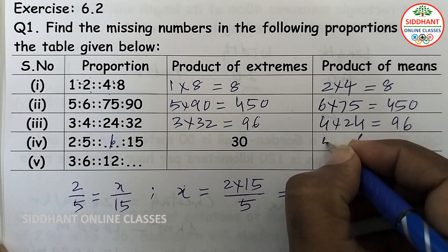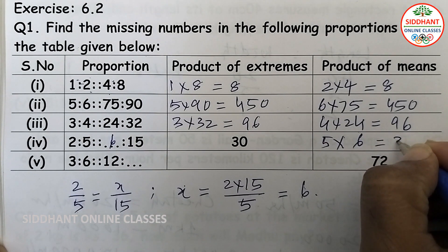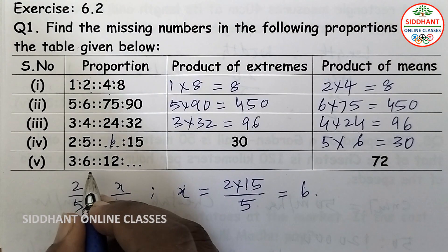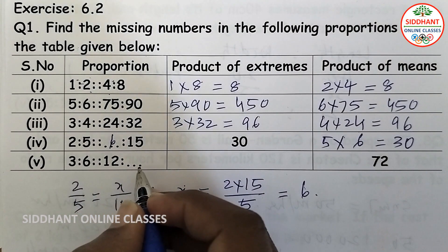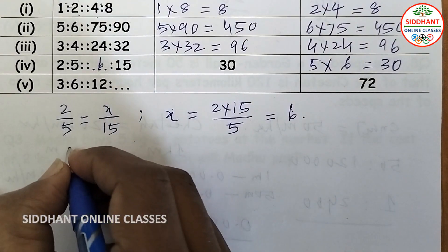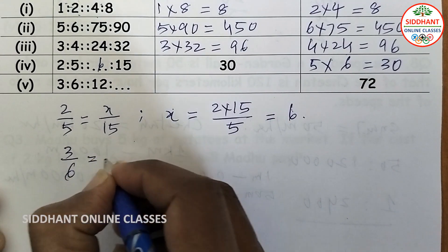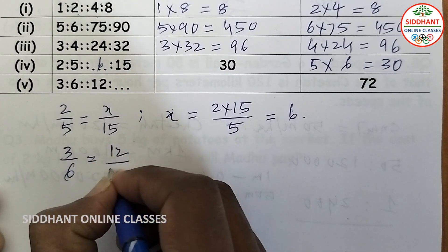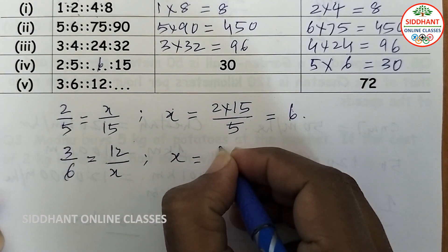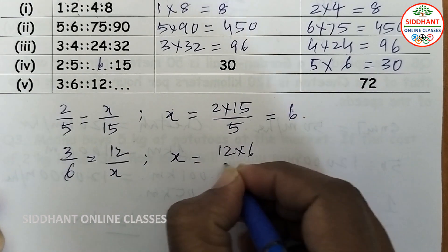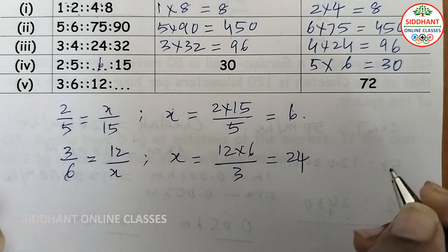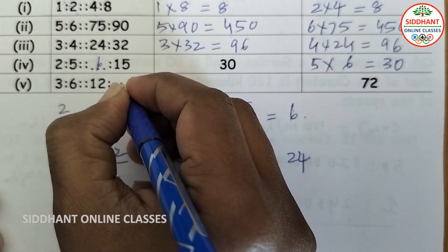Verification: 5 into 6 equals 30, confirming the product of extremes. Fifth proportion: 3 is to 6 and 12 is to x. Setting up: 3 by 6 equals 12 by x, so x equals 12 into 6 divided by 3, which equals 24.